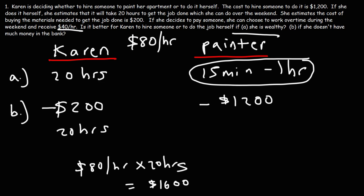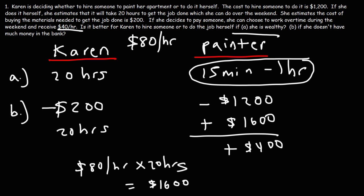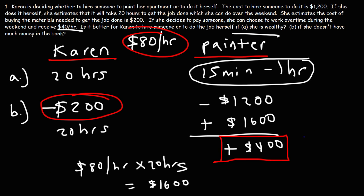At $80 times 20 hours, she earns $1,600 by going to work. So her bank account increases by $1,600, and the net result is that her bank account increases by $400. In both cases she's spending the same 20 hours of time, so the time value is the same. But by hiring a painter and going to work, she earns an additional $400, whereas doing it herself her bank account decreases by $200. So it's better for her to go to work while hiring a painter, because she ends up with more money at the end of the day.